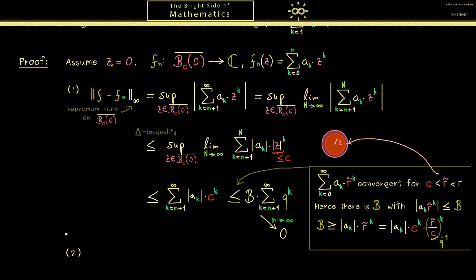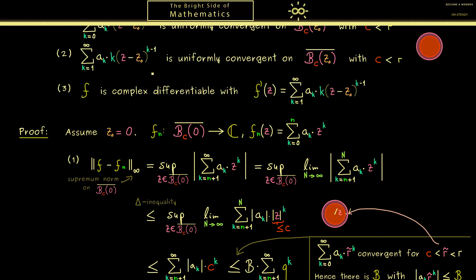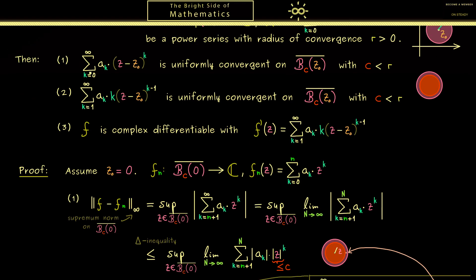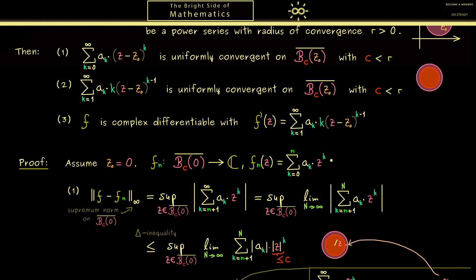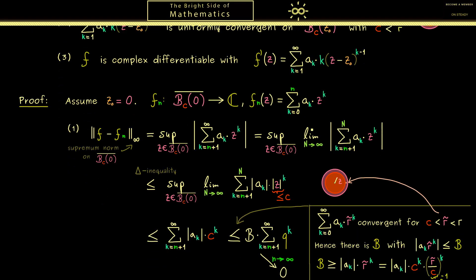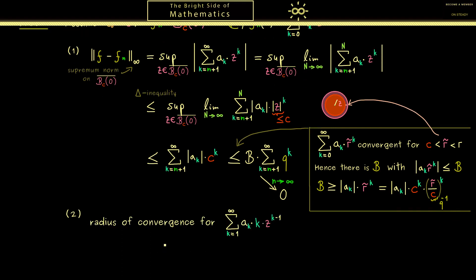Fortunately, part 2 can be proven with exactly the same steps. Looking at the statement, it looks exactly like part 1 — the only difference is that we have another power series with different coefficients, which doesn't change the argument. The only thing we need to check is that the formal derivative power series has the same radius of convergence as the original. We do this using the Cauchy-Hadamard theorem: the new coefficients are given by ak times k, which we can call Bk-1.